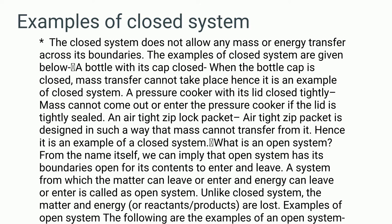What is an open system? From the name itself, we can imply that an open system has its boundaries open for its contents to enter and leave. A system from which matter can leave or enter and energy can leave or enter is called an open system. Unlike a closed system, the matter and energy — or reactants and products — are lost. Examples of open systems: a frying pan, as we can put food inside and take food from it, is a clear example. An open bottle — water can come out and enter an open bottle, hence an open system.